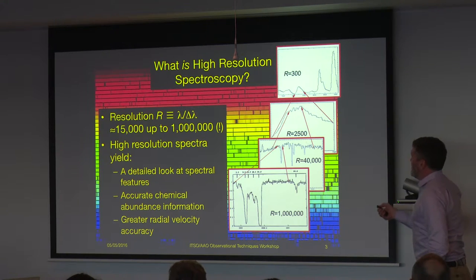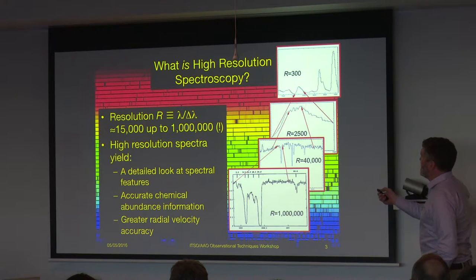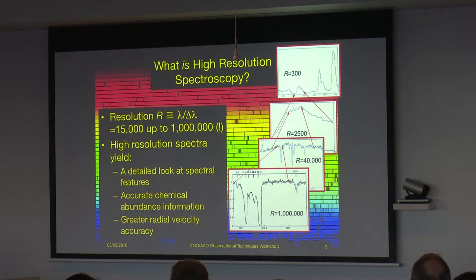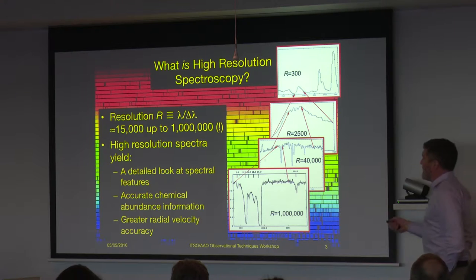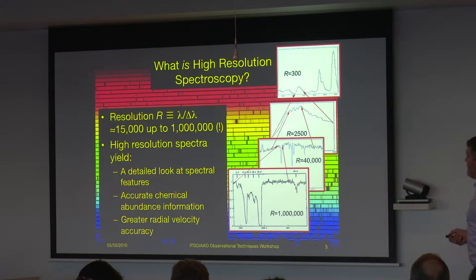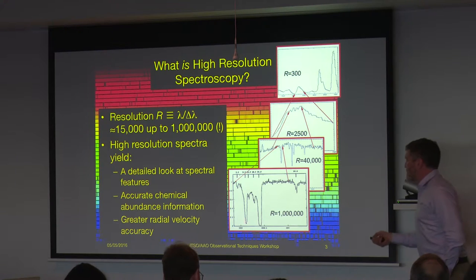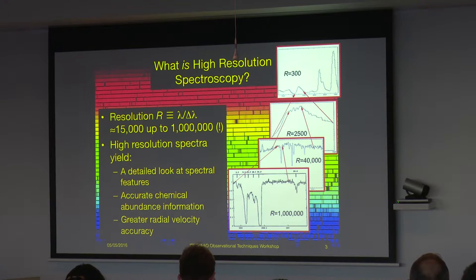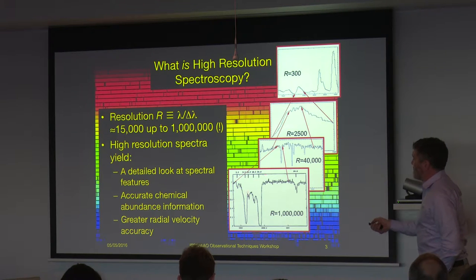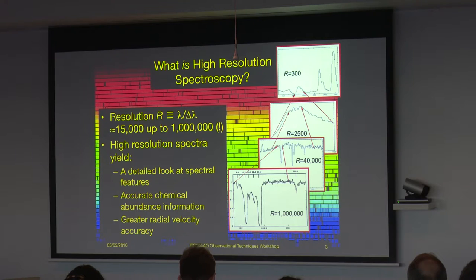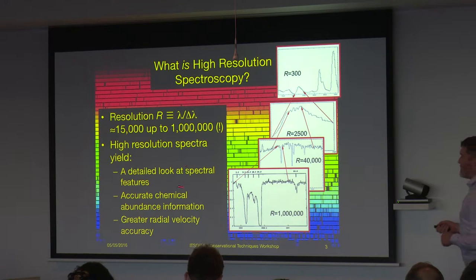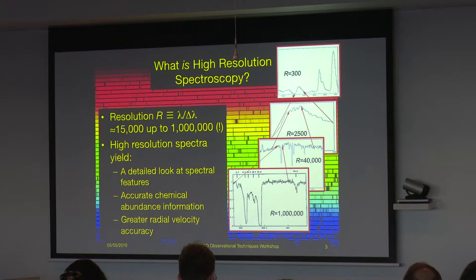If you then take a huge leap in resolution to 40,000, you see these little vague bumps and wiggles actually refine into fairly sharp and well-defined absorption features, and even an emission feature there. And then if you go to an almost ridiculous extreme and go to a resolution of a million, which is only possible with some of the very brightest stars including the sun, you can see that even each one of these individual absorption features resolves into multiple features. So with high resolution spectra, you get a really detailed look at the spectral features, and you can use that to get very accurate chemical or elemental abundance information, and also much greater radial velocity accuracy.